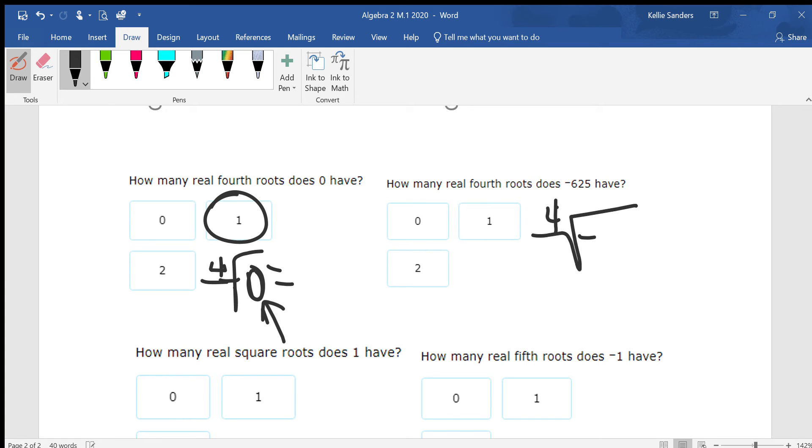The fourth root of negative 625. You cannot have four numbers multiplied together, even if they were negative, and get a negative answer. You can't have an even amount of negatives and get a negative answer, so you're going to have zero answers.